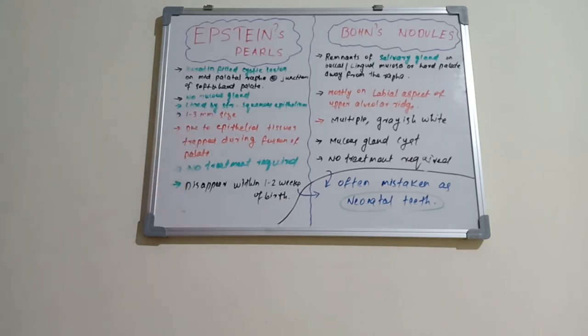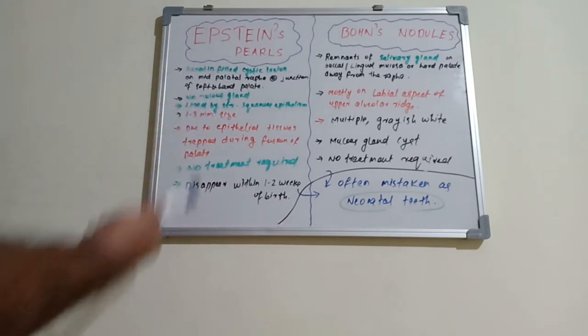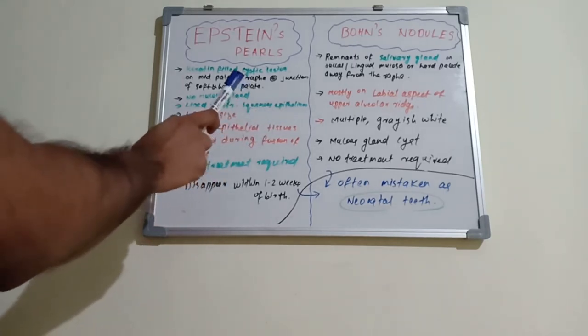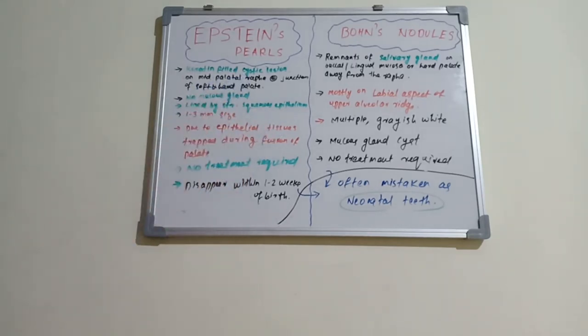The Epstein pearls are 1 to 3 millimeter in size. Why is this happening? It is because of the epithelial tissues trapped between the palate during fusion, so during palatal fusion of soft and hard palate, the epithelial tissue gets entrapped and it becomes a cystic lesion.